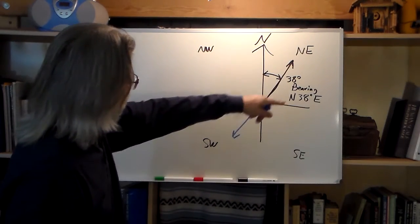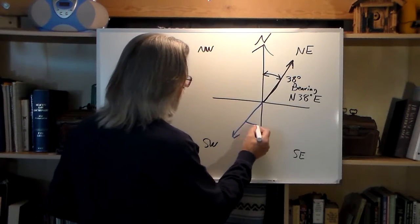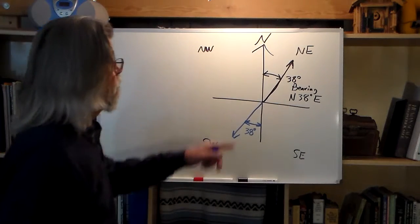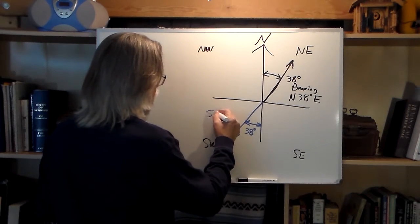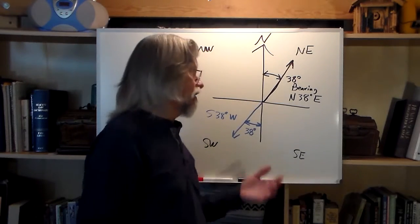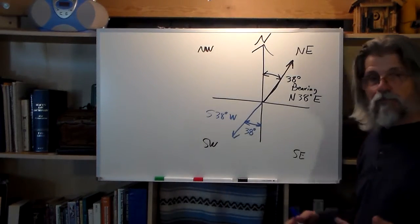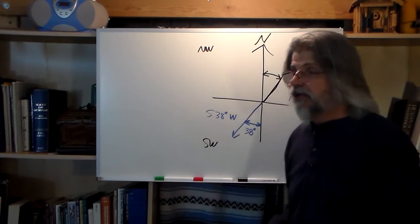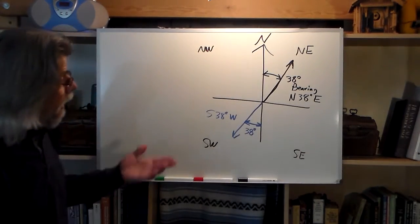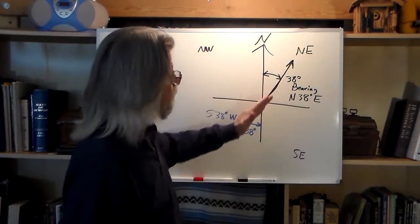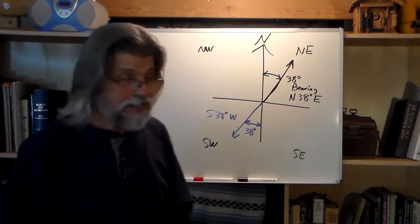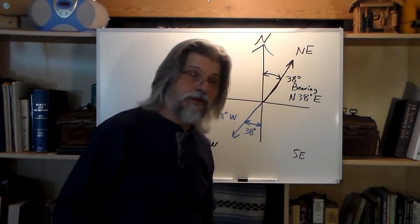Because these are perpendicular lines and this is a straight line, this angle on the other side — drawn in blue — is also 38 degrees. The bearing of this back line would be south 38 degrees west. Notice we didn't have to do any math. All you have to do is reverse the quadrant: if this is in the northeast quadrant, the back bearing is in the southwest quadrant. Going in this direction you're going south 38 west; going the other way you're going north 38 east. That's the concept of the back bearing.